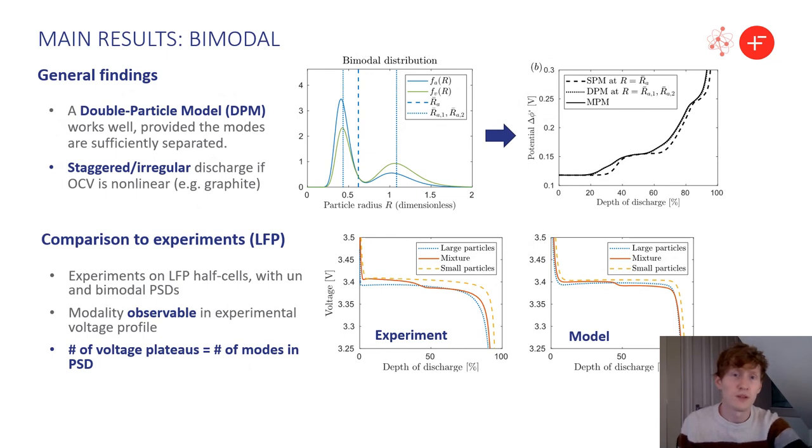For bimodal PSDs, the general findings were that a double particle model works well, provided the modes are sufficiently separated. Then, a staggered or irregular discharge is possible if the OCV is non-linear, such as the case for graphite. The spread around each mode is then only a secondary effect.